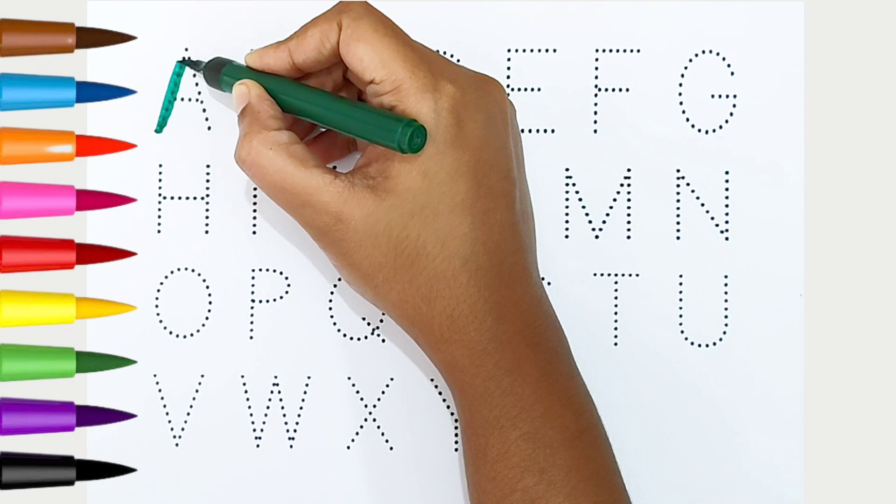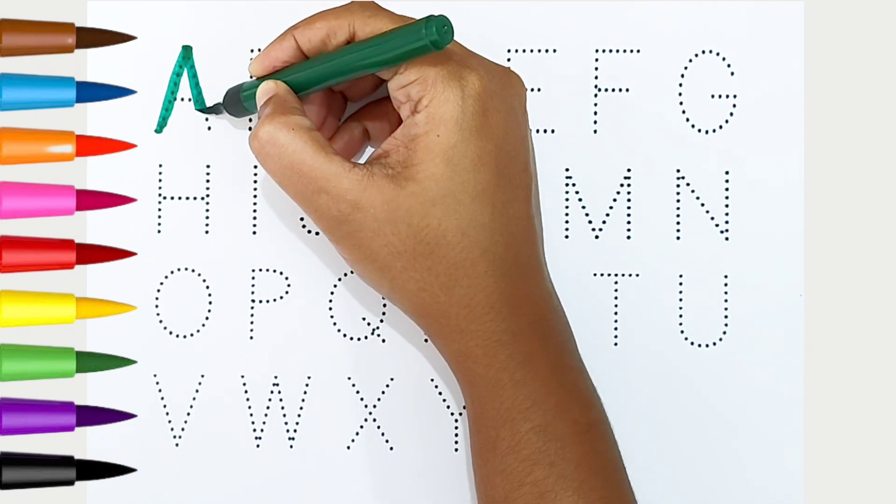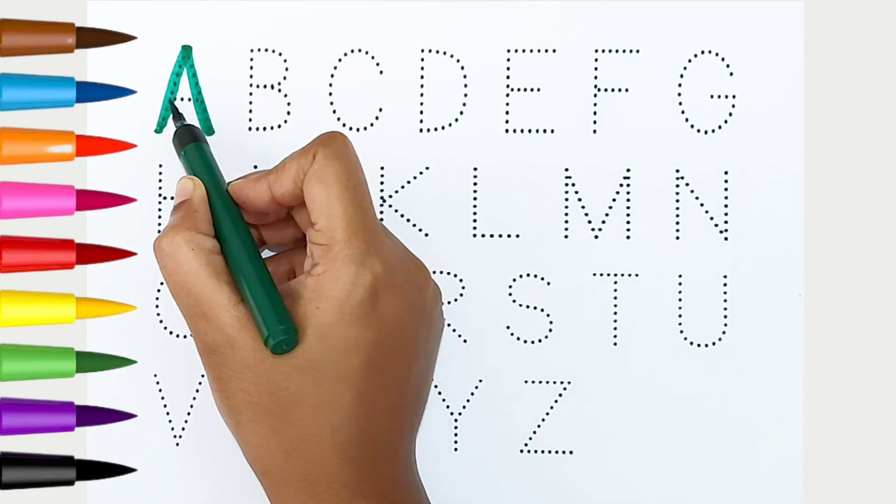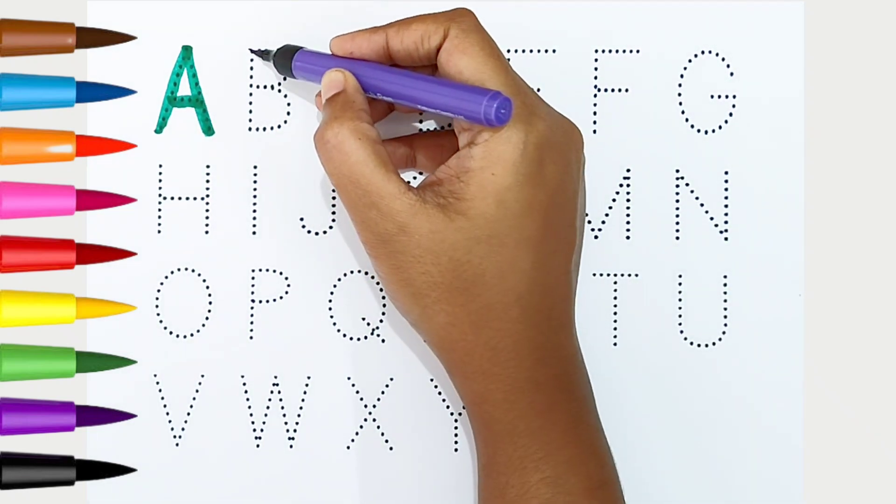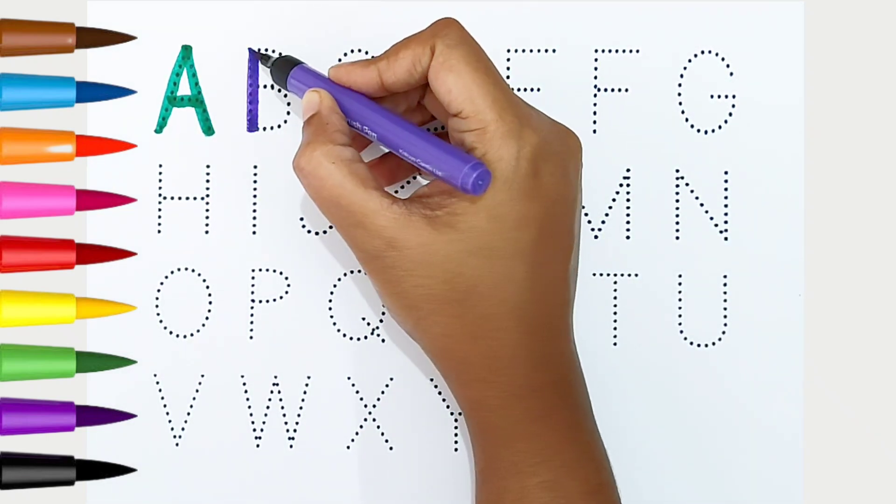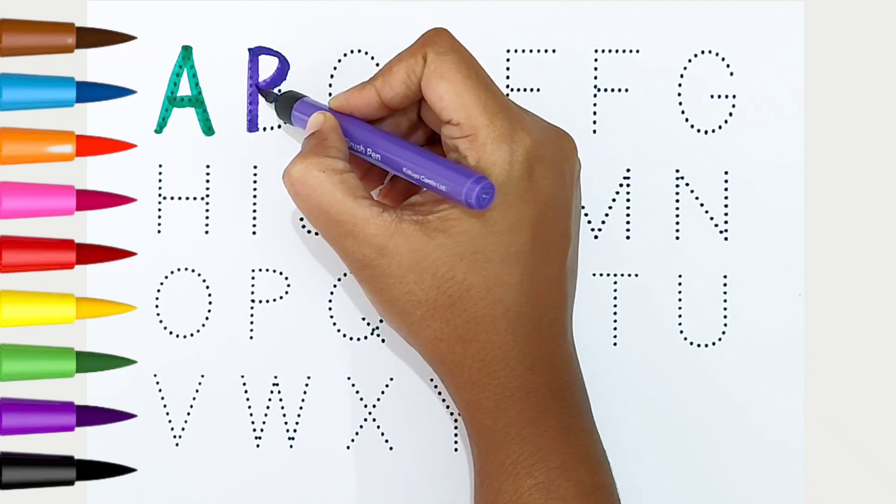A, the green color. A is for apple. B, violet color. B is for bat.